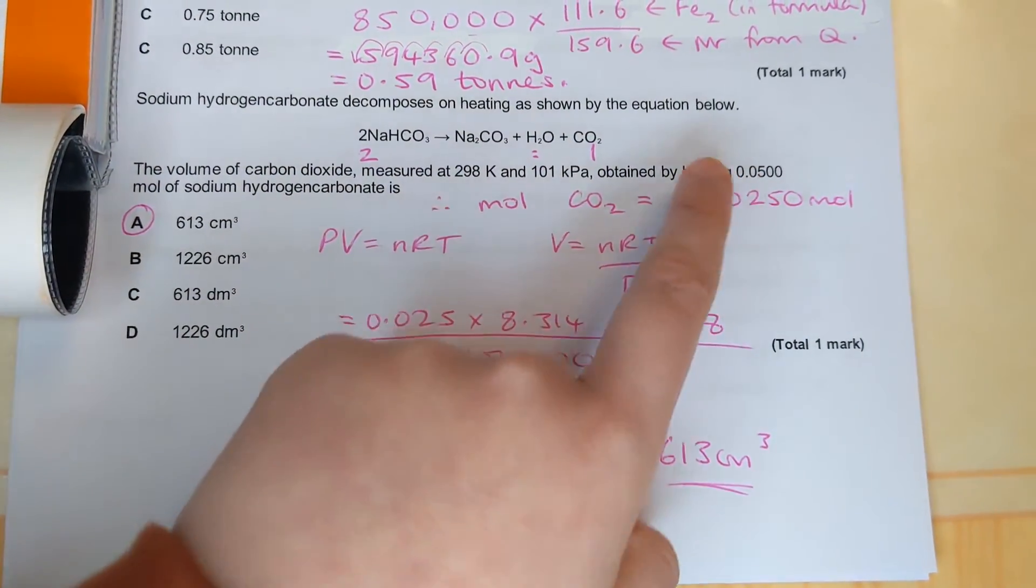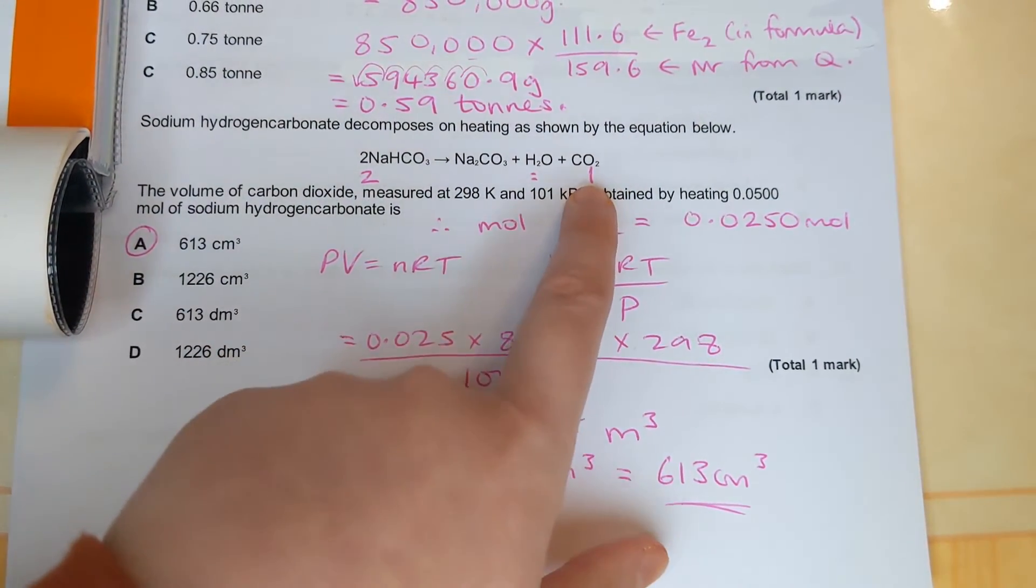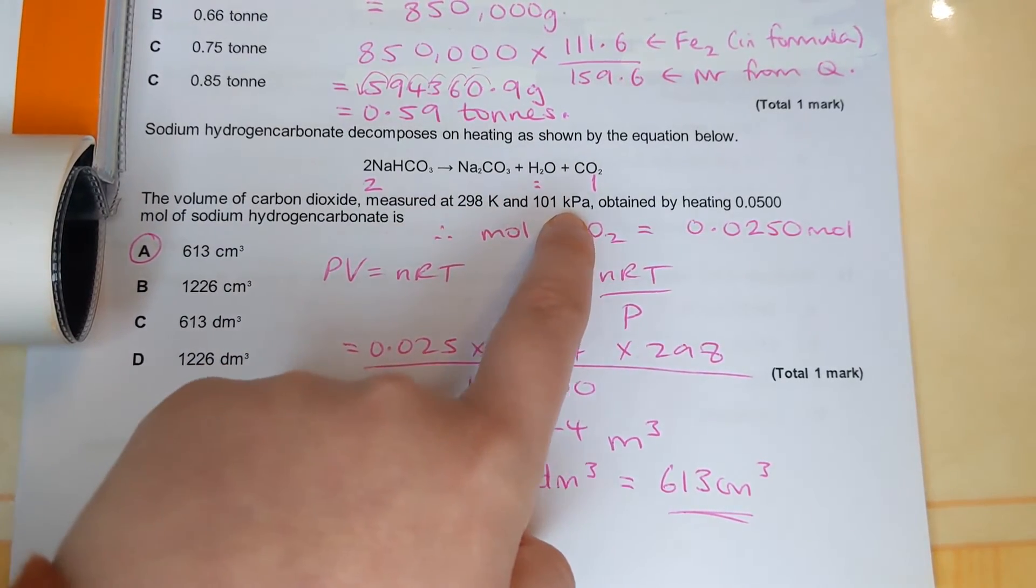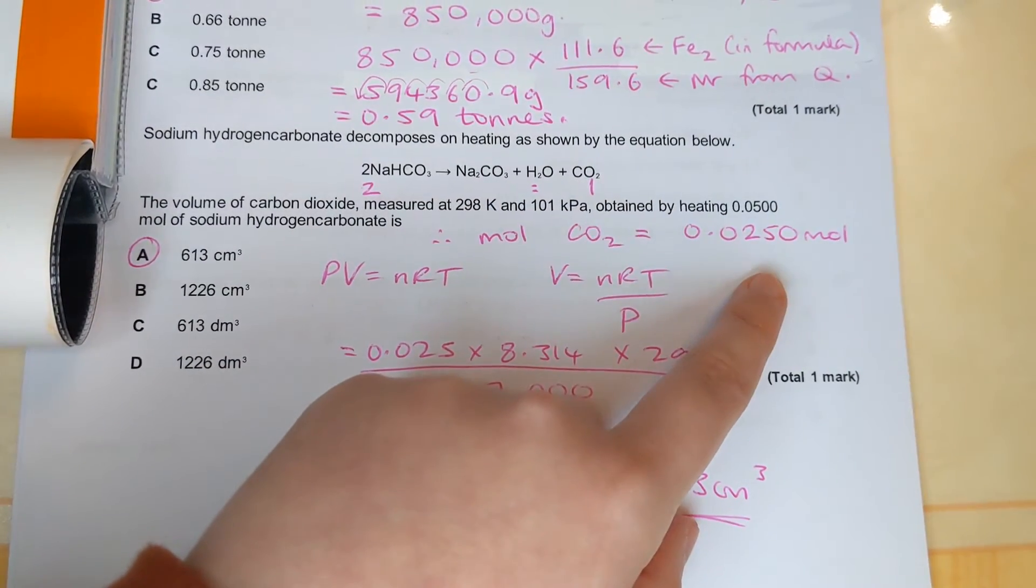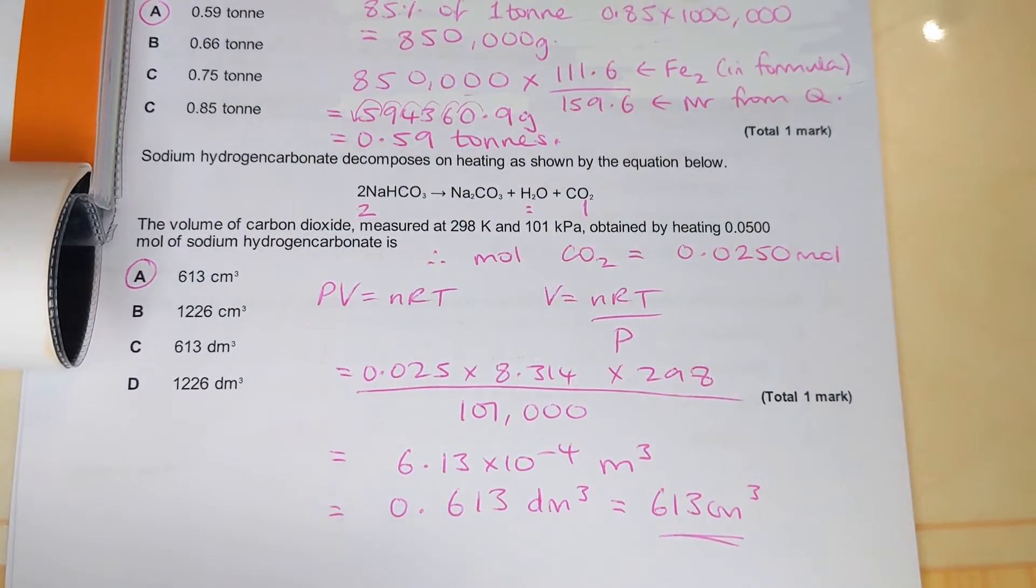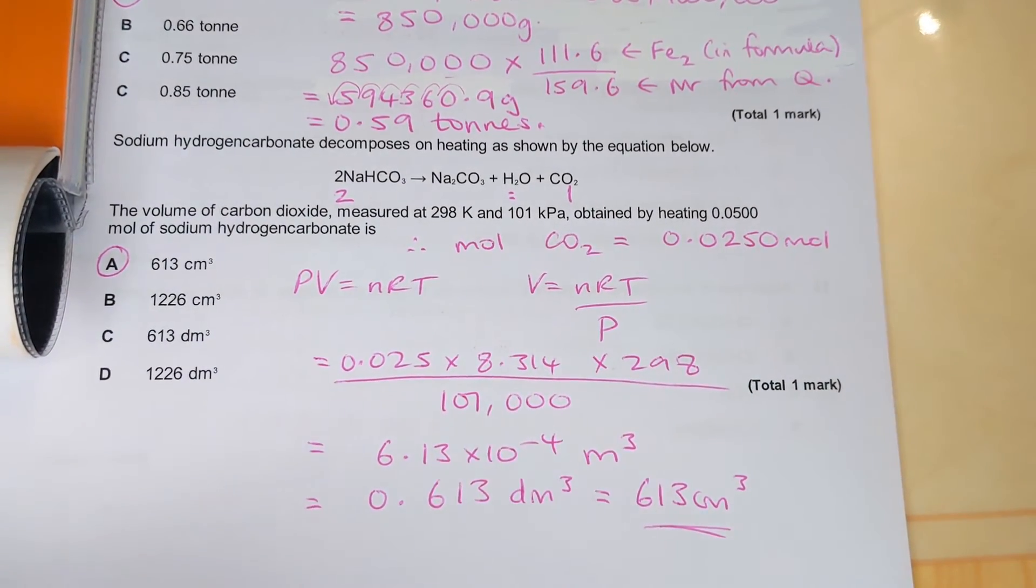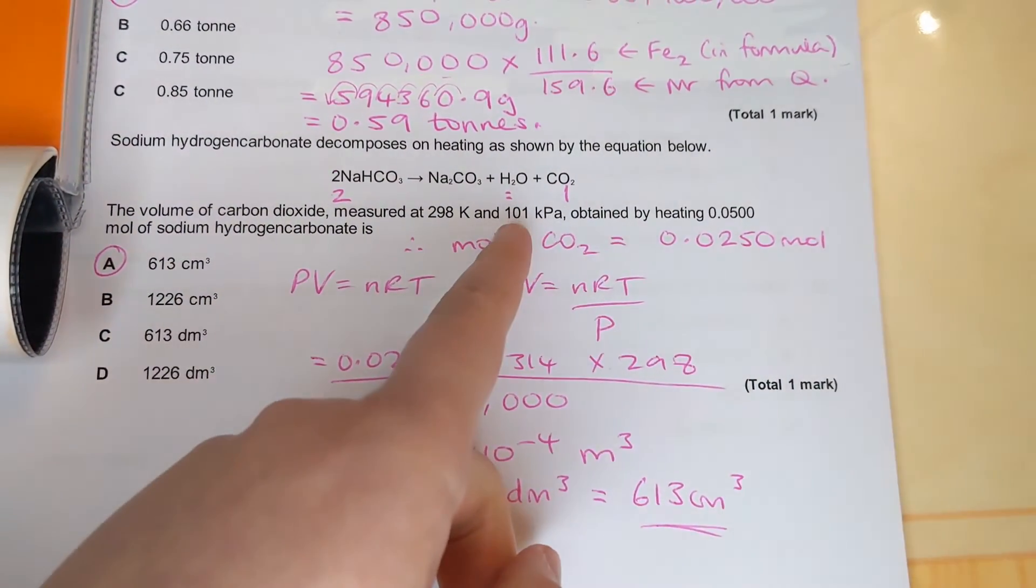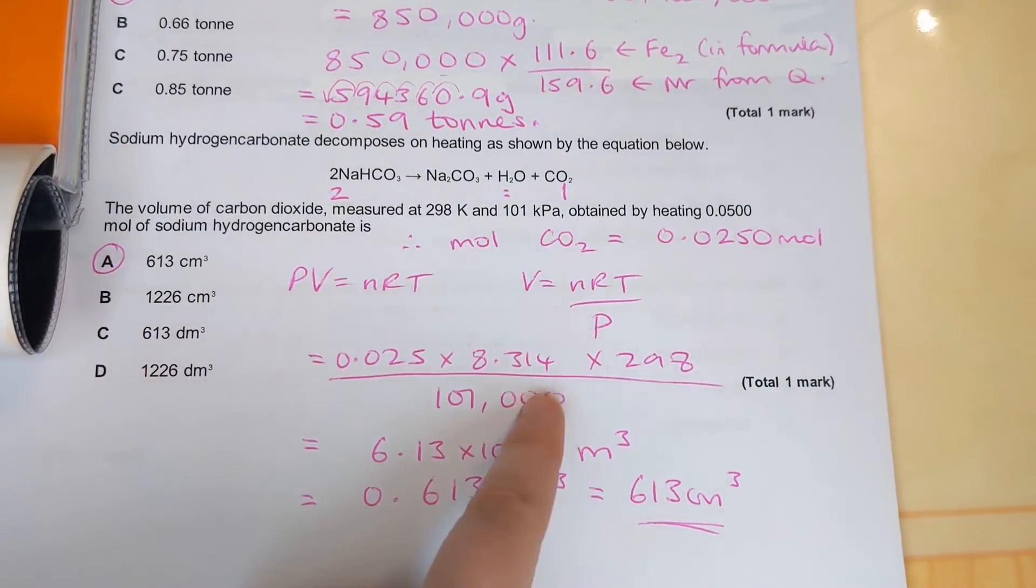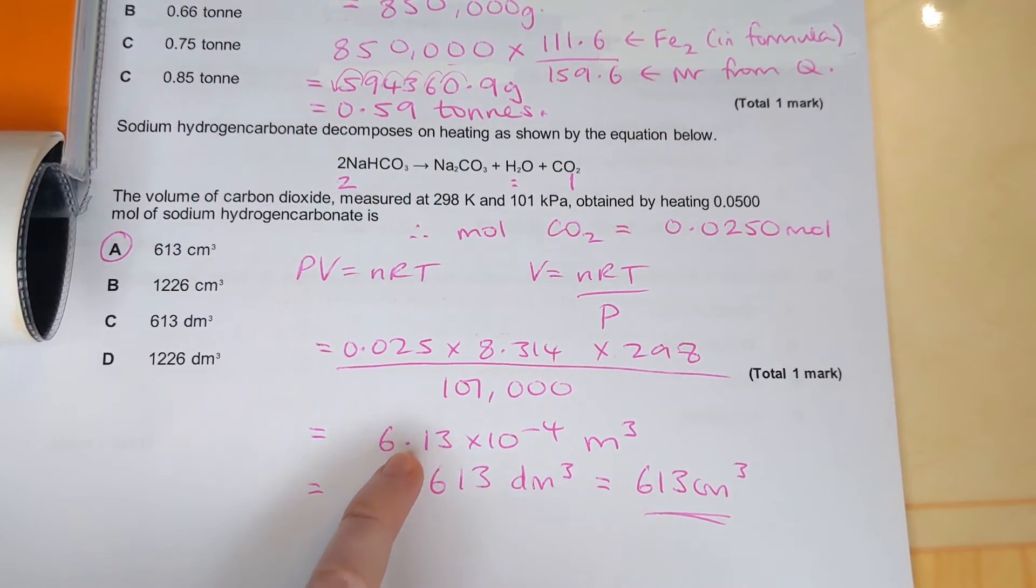The question's asking about carbon dioxide. Notice it's a two to one ratio, so straight away we need to divide our moles of sodium hydrogen carbonate by two to get moles of carbon dioxide. And we're given temperature and pressure, we have moles as well, and it's asking us about volume, so that is the ideal gas equation. We plug our numbers into the equation, converting our pressure into pascals because that's the SI unit for the ideal gas equation.